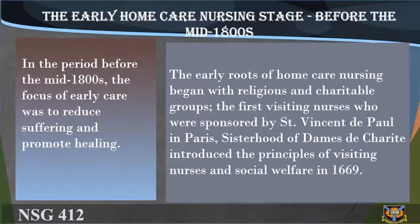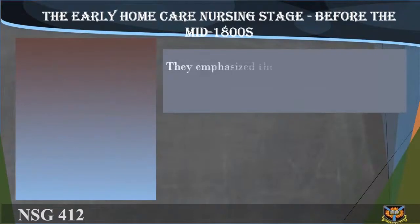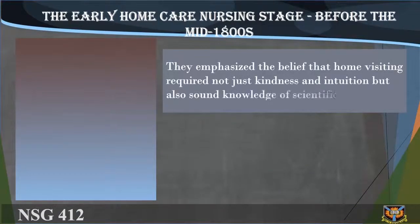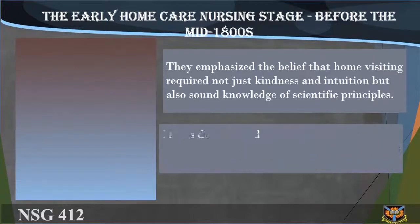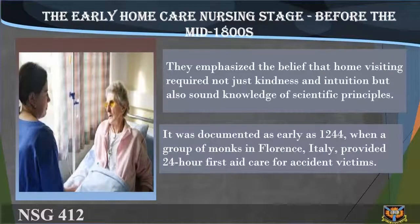The early home care nursing stage — before the mid-1800s — focused on reducing suffering and promoting healing. The early roots of home care nursing began with religious and charitable groups. The first visiting nurses, sponsored by Saint Vincent de Paul in Paris and the Sisterhood of Dames de Charité, introduced principles of visiting nurses and social welfare in 1669, emphasizing that home visiting required not just kindness and intuition but also sound knowledge of scientific principles.